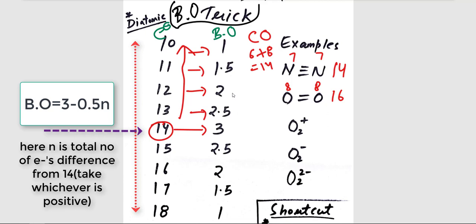if we increase the total number of electrons by 1, for example, from 14 to 18—15, 16, 17, and 18—the bond order corresponds to 2.5, 2, 1.5, and 1.